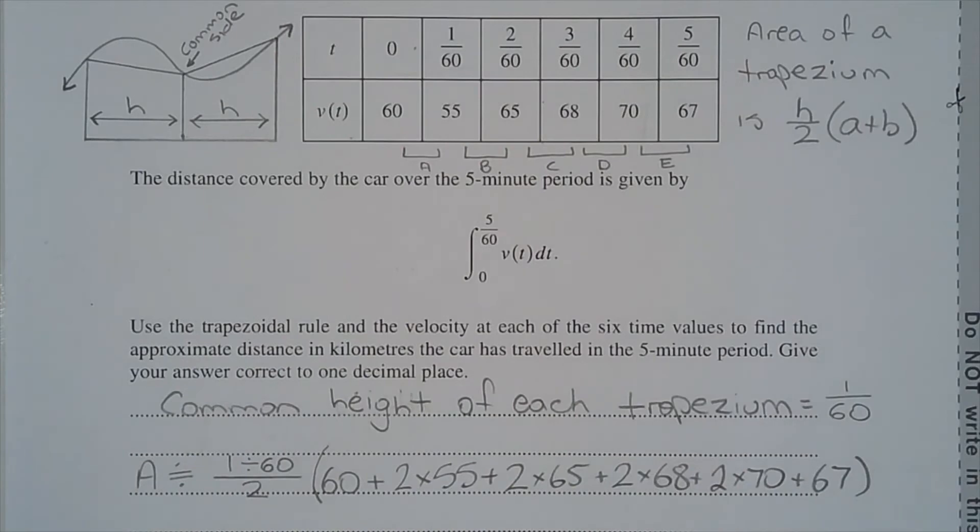Since there are 6 function values, 5 trapeziums will be used to estimate the area given by this integral, which represents the distance covered by the car over the 5-minute period.